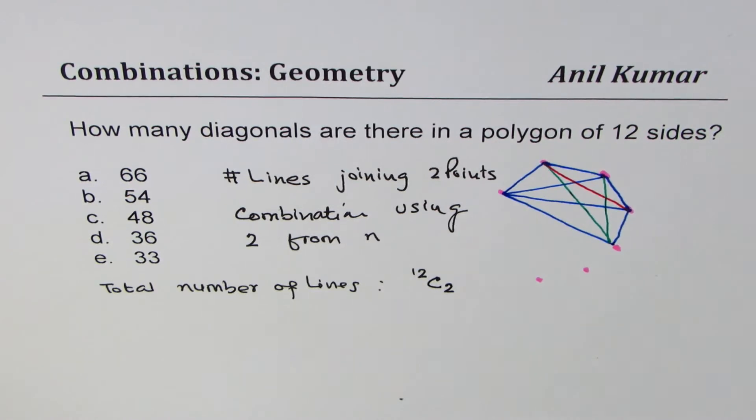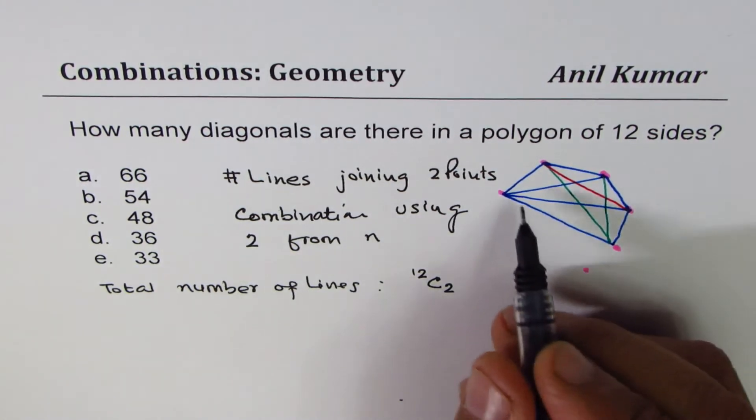12C2 is the total number of lines which you could draw. So out of these, what we see is...